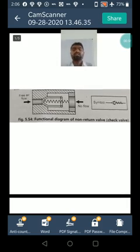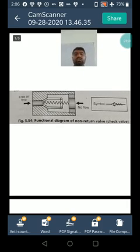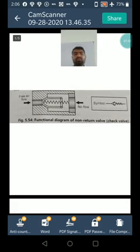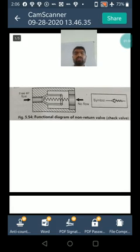First there is a diagram of check valve. Figure shows 5.54. On achieving the required force to lift a poppet against the spring, air flows in free flow direction. Check valves are installed.